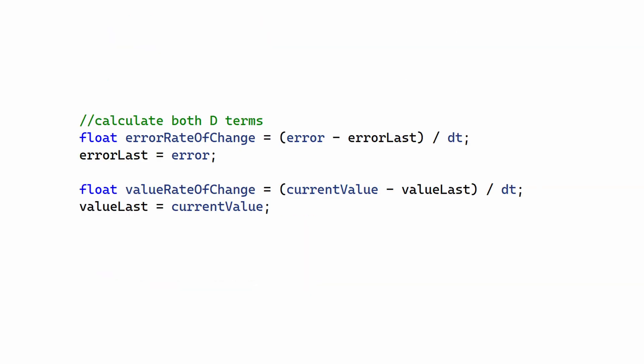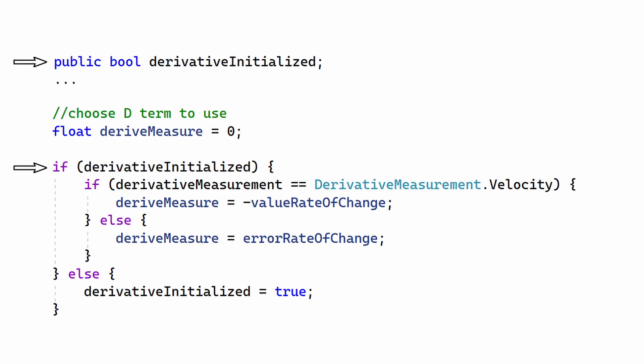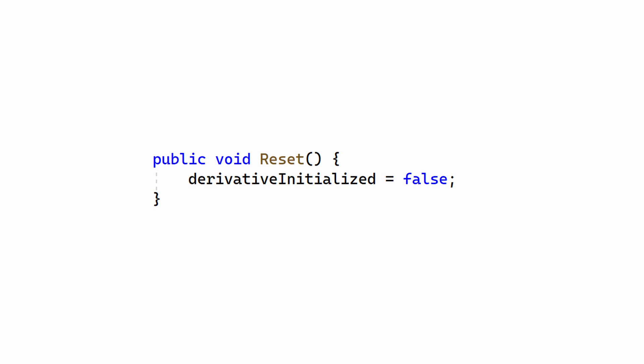There's one final problem with the D-term: it depends on the error or value from the previous iteration. What happens on the first iteration when there is no previous data? C-sharp initializes the member variables to zero, so the initial iteration can cause a large D-term for a single frame, much like a derivative kick. The solution is to skip calculating the D-term on the first iteration. Finally, a method is added to reset this variable. Reset will be called if the system is moved by external means, such as being teleported, or if the PID controller has been turned off for a long period of time.